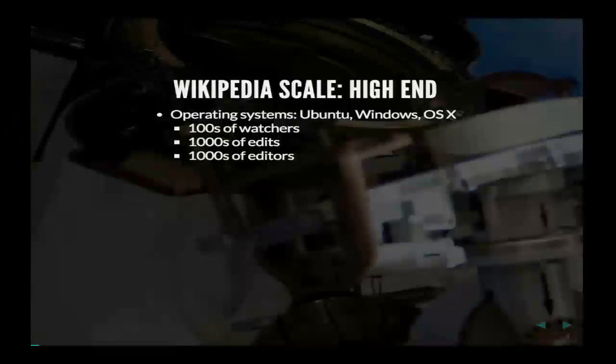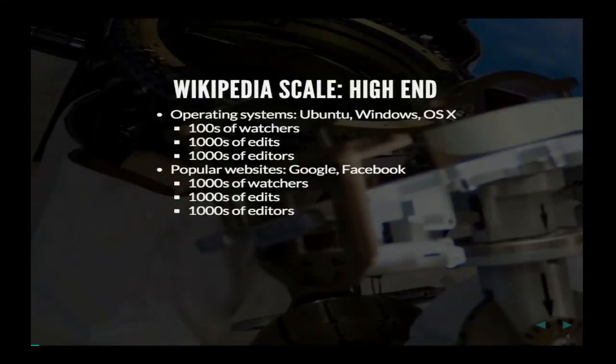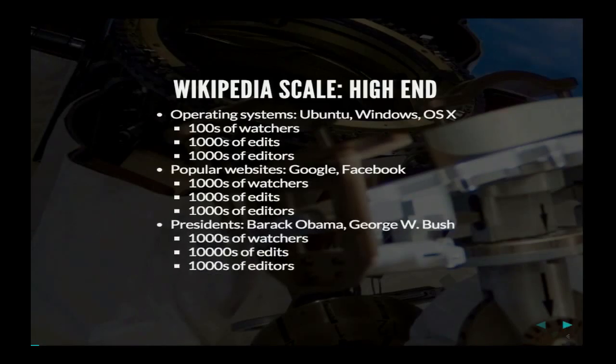On Wikipedia, you've got a lot of different articles. On highly technical things like Windows and OS X, you've got pages with hundreds of watchers and thousands of edits and editors. Google and Facebook pages similarly have thousands of watchers and editors. The most edited page ever on Wikipedia is probably the George W. Bush page with about 60,000 edits.